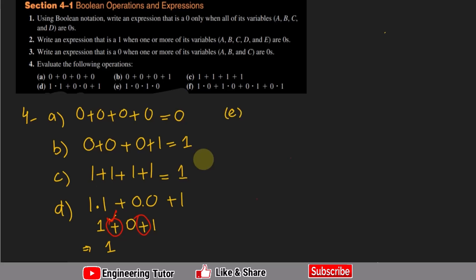In part e: 1 · 0. Since it is a dot (AND) operation and one of the operands is 0, the result is 0. There are two zeros here, so the answer is 0.